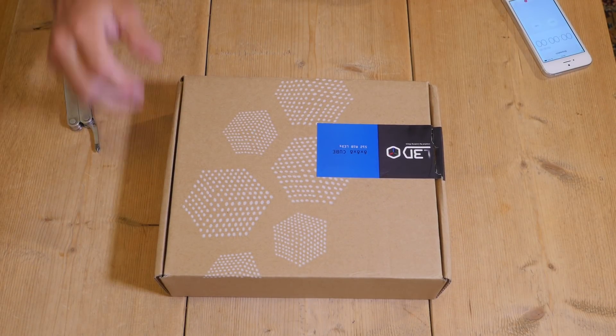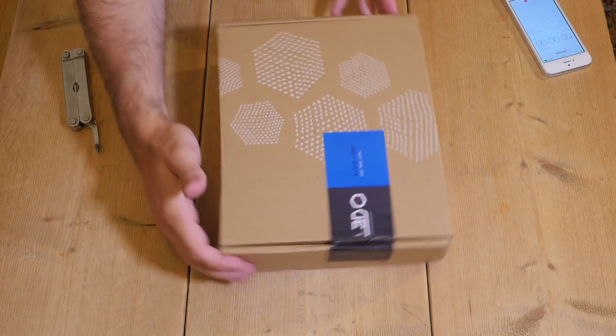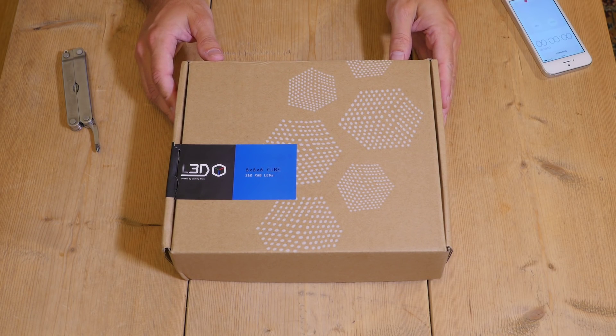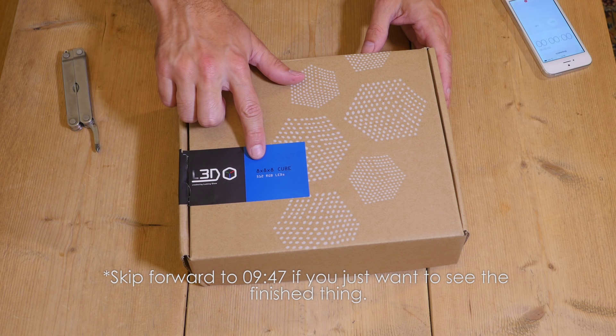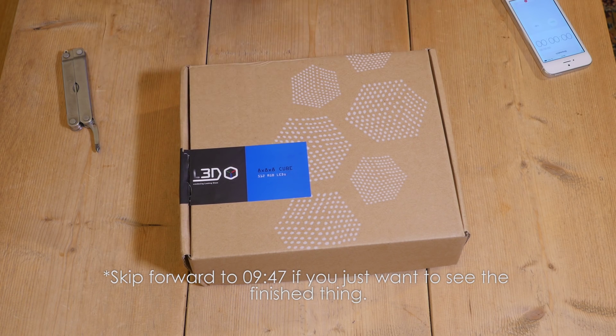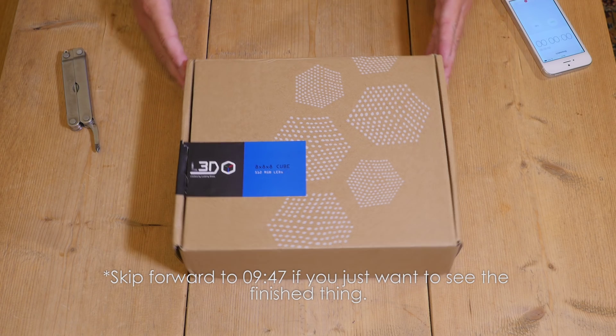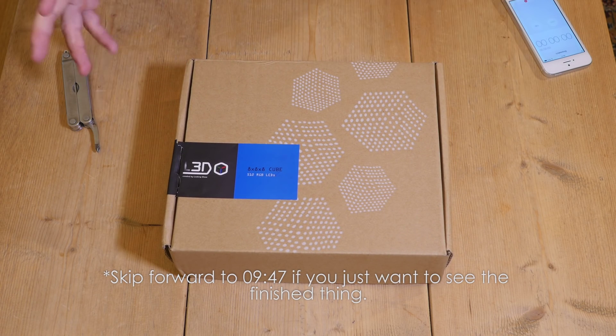Okay, so I've just had this thing arrive in the post. It's by a company called Looking Glass and it's the L3D Cube. This version is the 8x8x8 RGB which gives you 512 LEDs in total and you can program displays and animations into it.